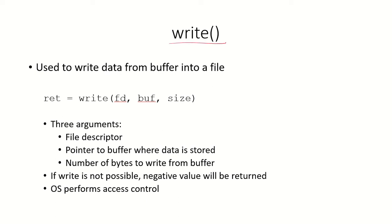The write system call allows the process to write data from a buffer into a file. Suppose the process has already opened a file which has the file descriptor FD and now the process wants to write into this file. Using the system call write, you give the file descriptor to refer to the file into which data is to be written, a pointer to the buffer where the data is stored, and the number of bytes to be written from the buffer as the third argument.